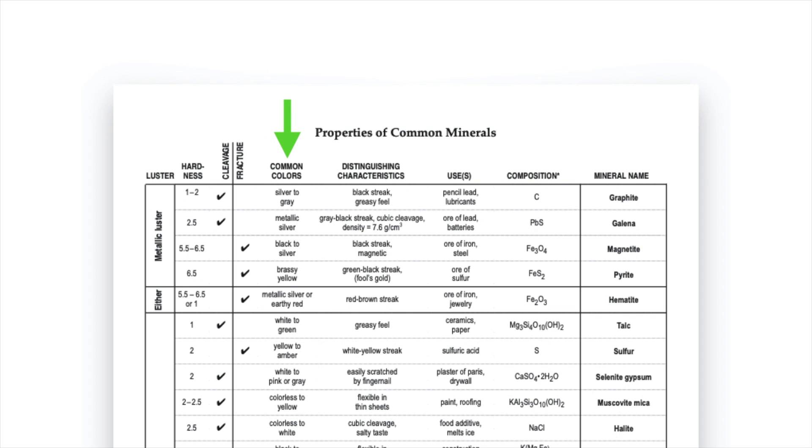Next is colors so this would be the actual color that the mineral commonly appears but please keep in mind that most minerals exist in a variety of colors and a lot of minerals come in the same color as each other so while that can be helpful it's not great on its own. You have to use multiple characteristics to identify something.